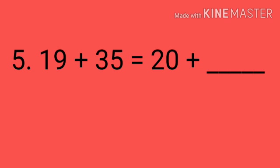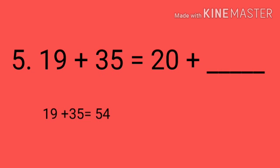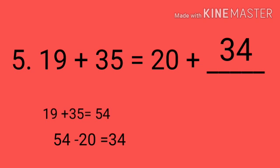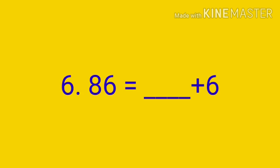Question number 5. 19 plus 35 is equal to 20 plus dash. So first we have to find out 19 plus 35, which is equal to 54. Then 20 plus dash — so 54 minus 20 is equal to 34. So 19 plus 35 is equal to 20 plus 34.